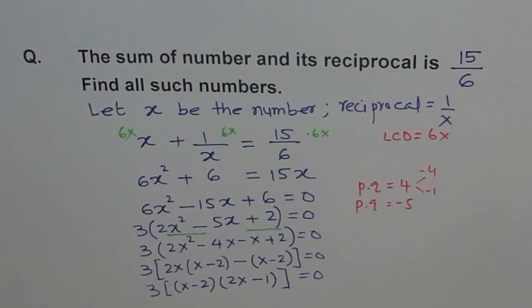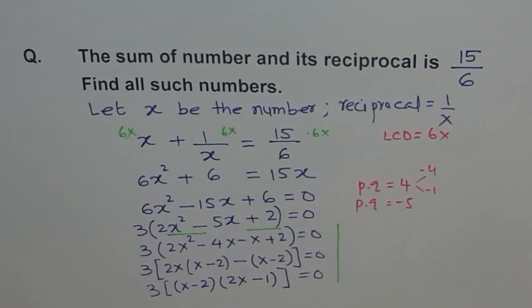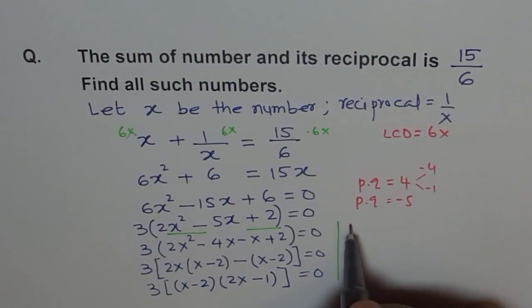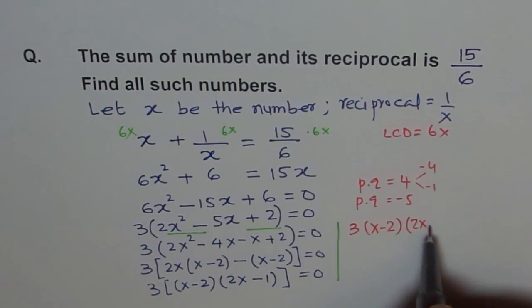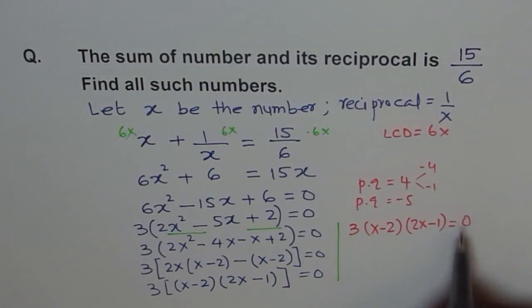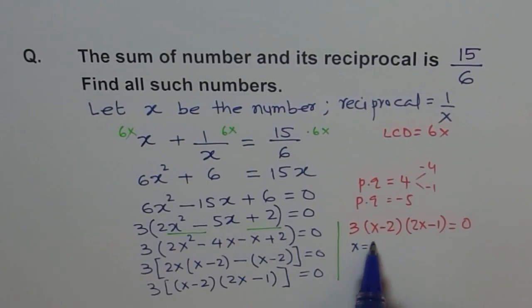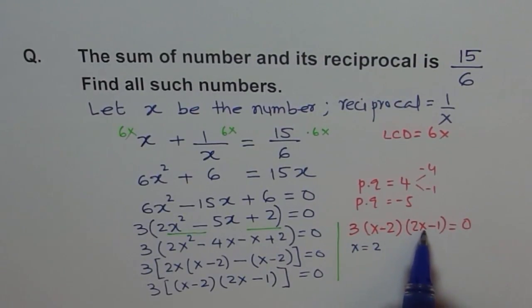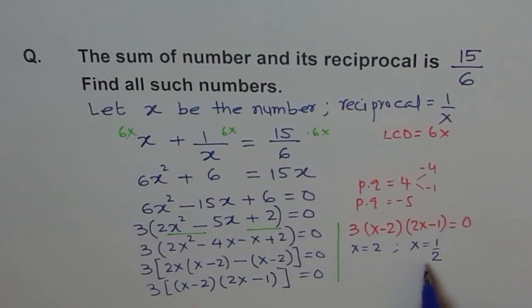So from here, we know when will this be 0. What values will give us 0? So let me write this equation again here. 3 times x minus 2 times 2x minus 1 equals 0. When is this equation equals to 0? This equation equals 0 at x equals 2 and at x equals 1/2.